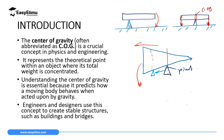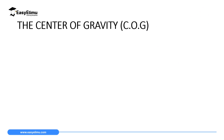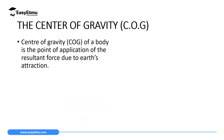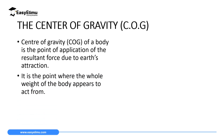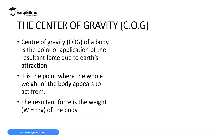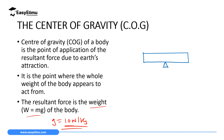Center of gravity can be defined in two ways. The first is that it is the point of application of the resultant force due to the attraction of the earth. We can also define it as the point where the whole weight of a body appears to act. The weight of a body can be calculated using the formula: weight equals mass times gravitational field strength, where g equals 9.81 newtons per kilogram, or approximately 10 newtons per kilogram when rounded off.